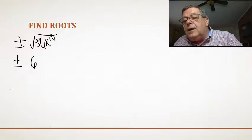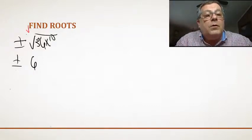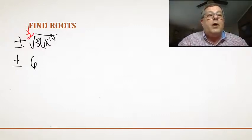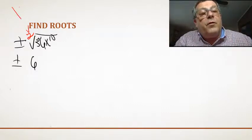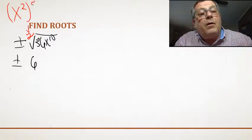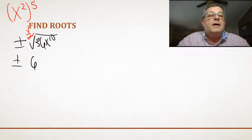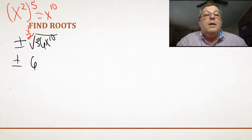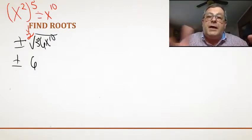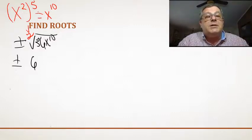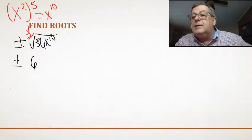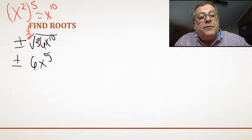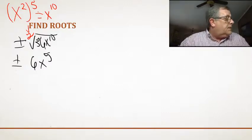Unless we have a number in the radical, we're going to assume it's a 2 — in other words we're taking the square root. You may remember, power of a power, we multiply those exponents. So x squared raised to the 5th power equals x to the 10th. But if I'm taking the root of that, I do the inverse — I divide. So x to the 10th, taking the square root, I divide 10 by 2 and end up with x to the 5th.